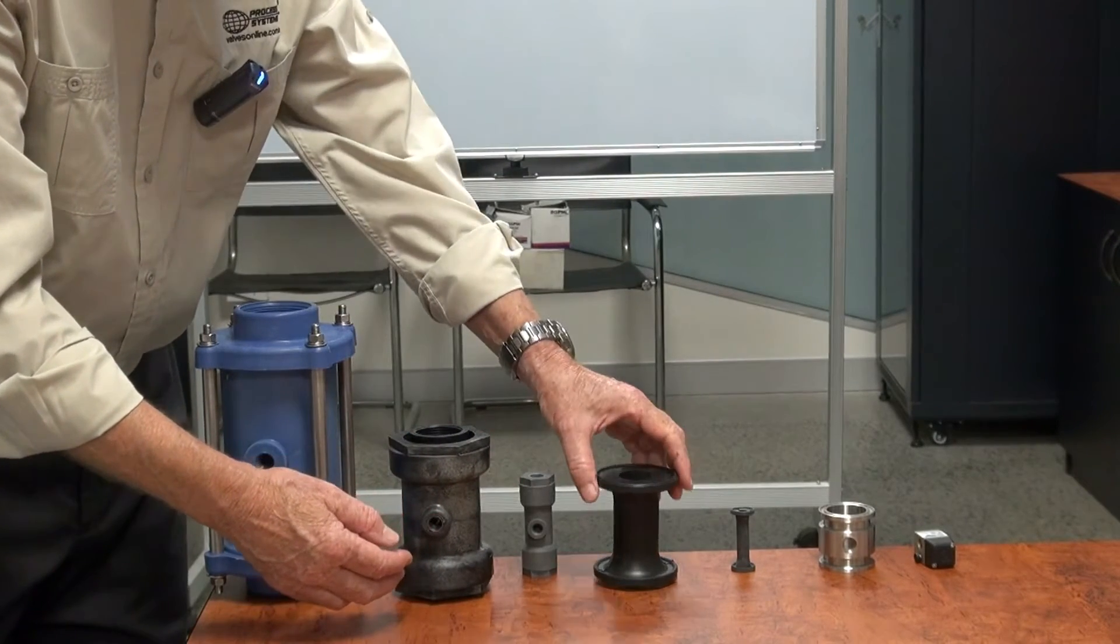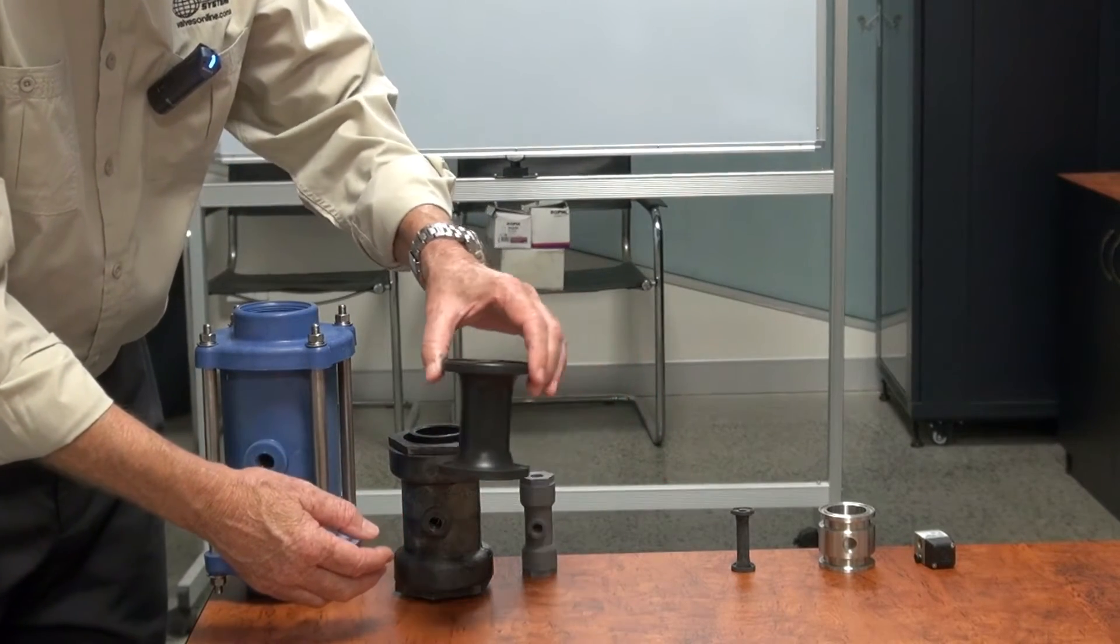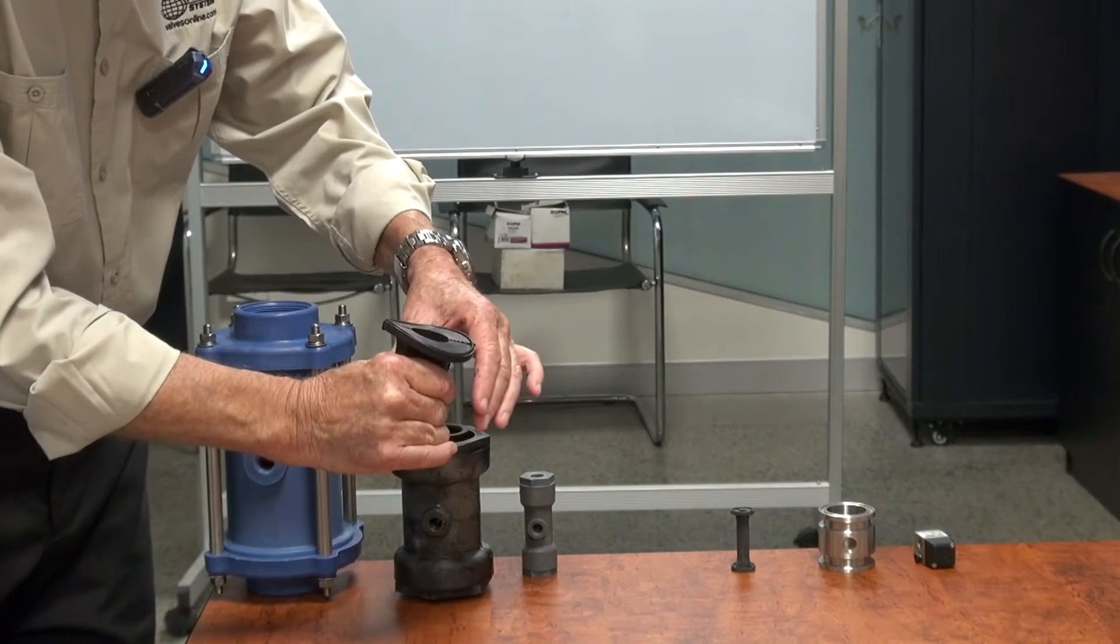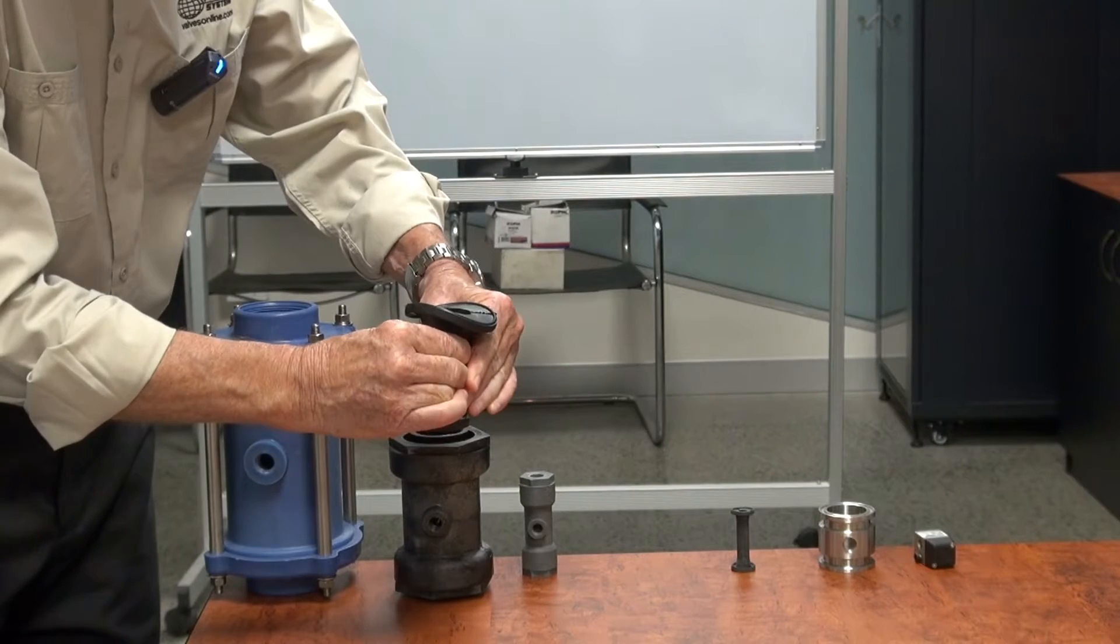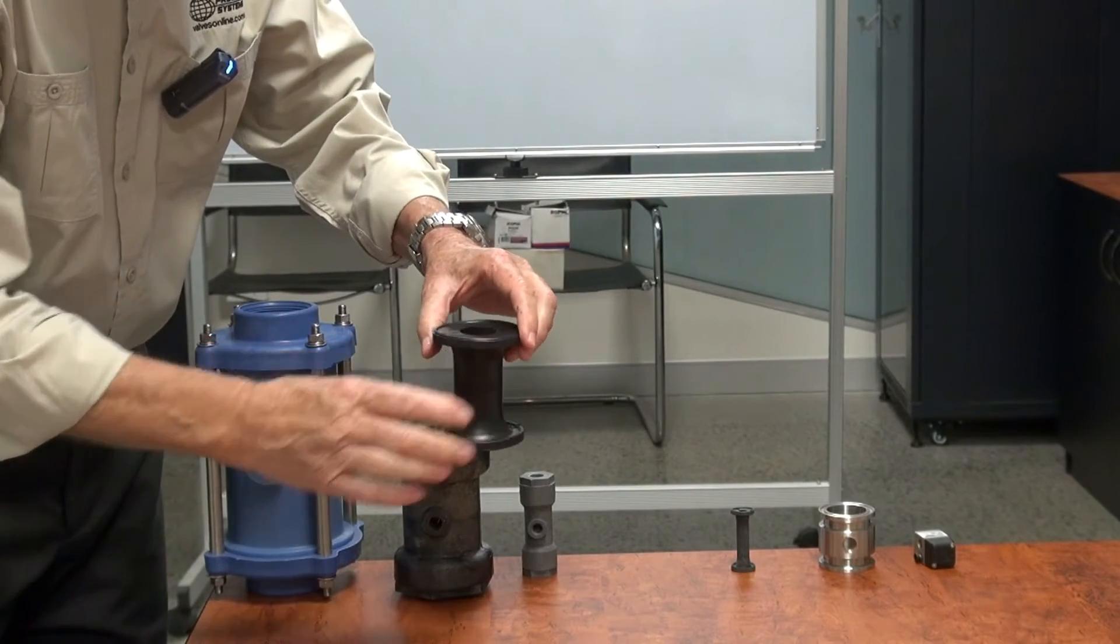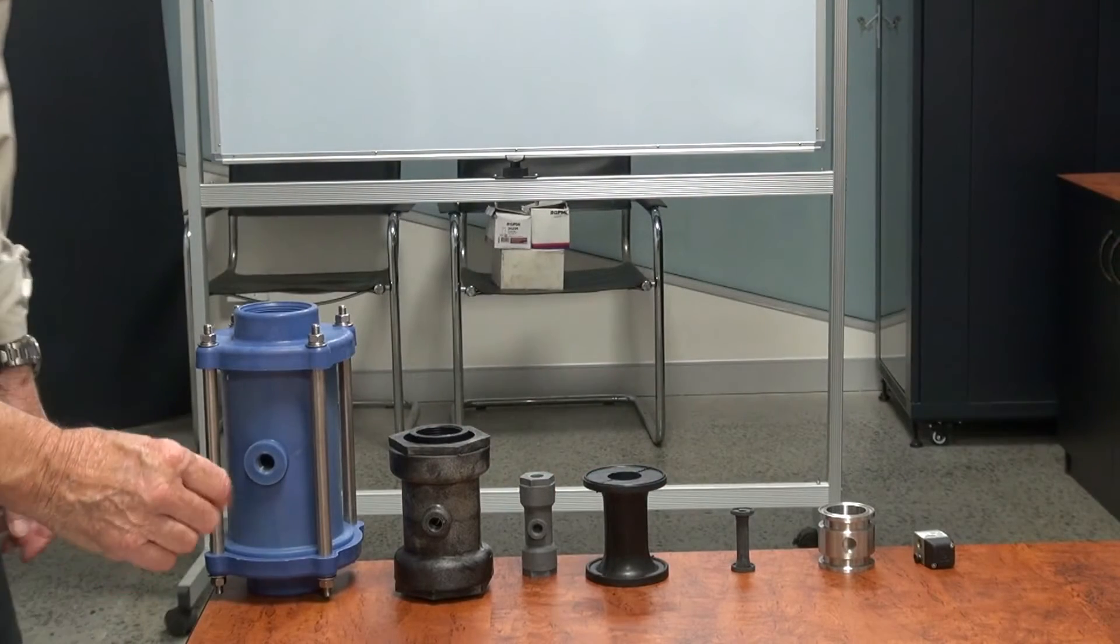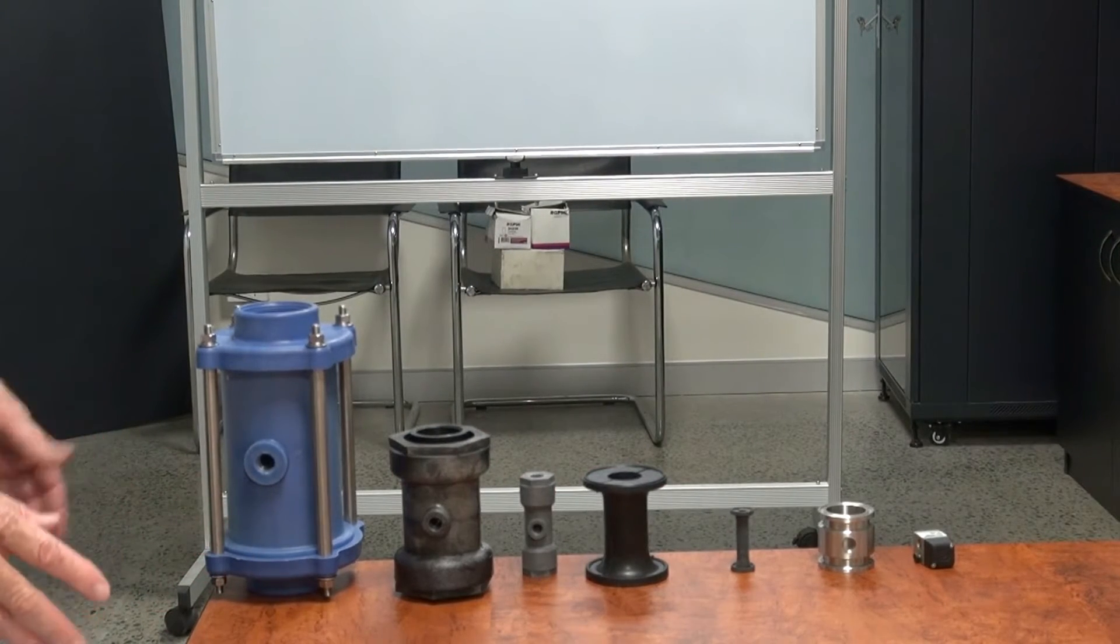You can imagine the valve sleeve like this, the product's going through, and the air signal comes along and just literally squeezes it closed, just like squeezing a water hose. That stops the flow. Release the air signal and the flow starts up again.